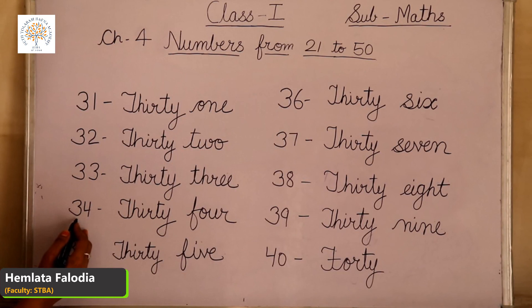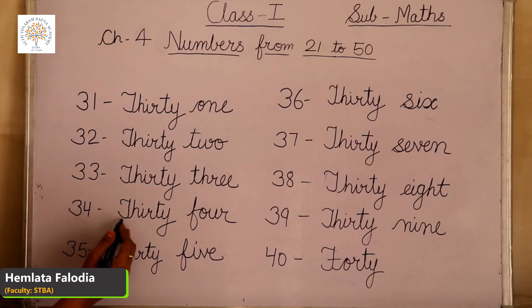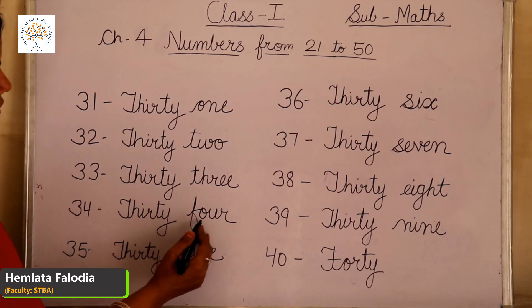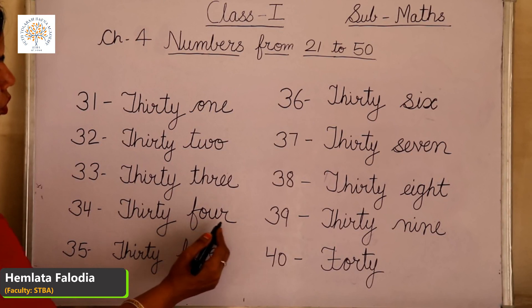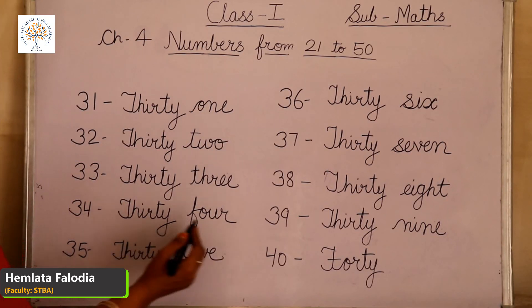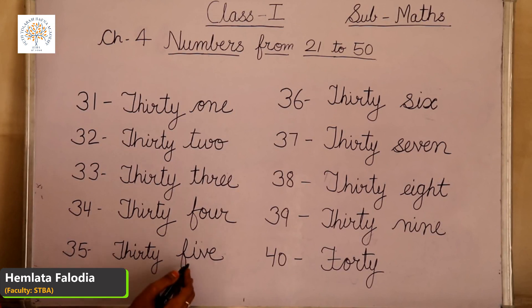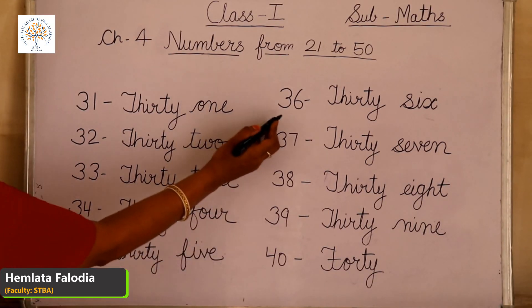Come to the next, 34. T-H-I-R-T-Y, 30 and 4. F-O-U-R, 4. This is 34. Come to the next, 35. T-H-I-R-T-Y, 30 and 5. F-I-V-E, 5. This is 35.